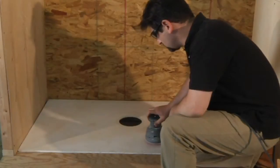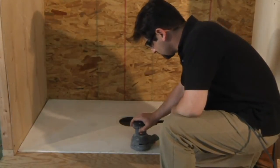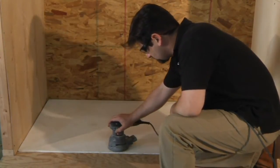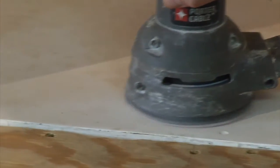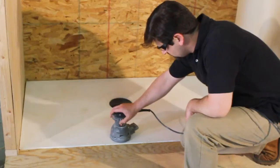Using a sander, rough up the surface of the pan so that the waterproofing will better adhere. Sand off the manufacturer's sticker that's on the front of the pan. Make sure to sand off the sticker's adhesive as well.